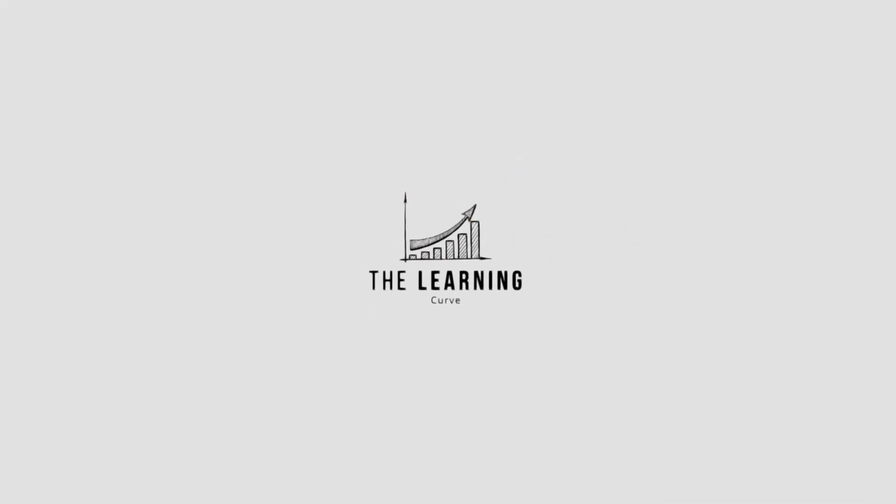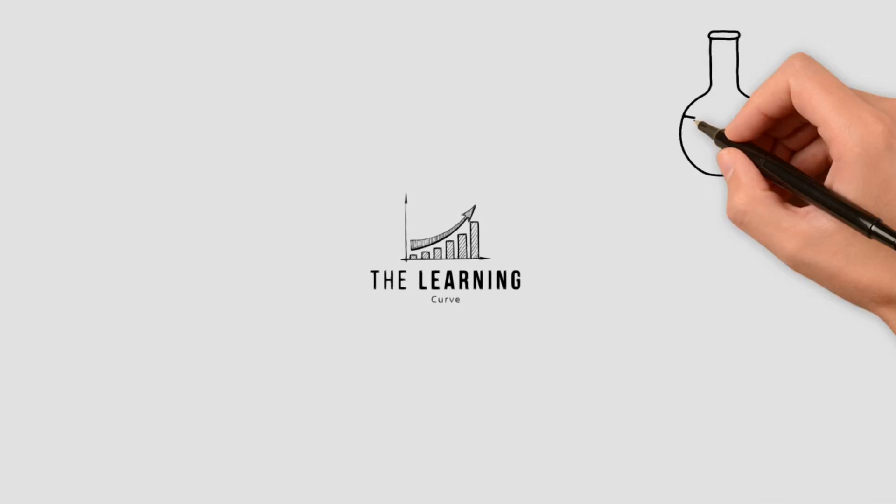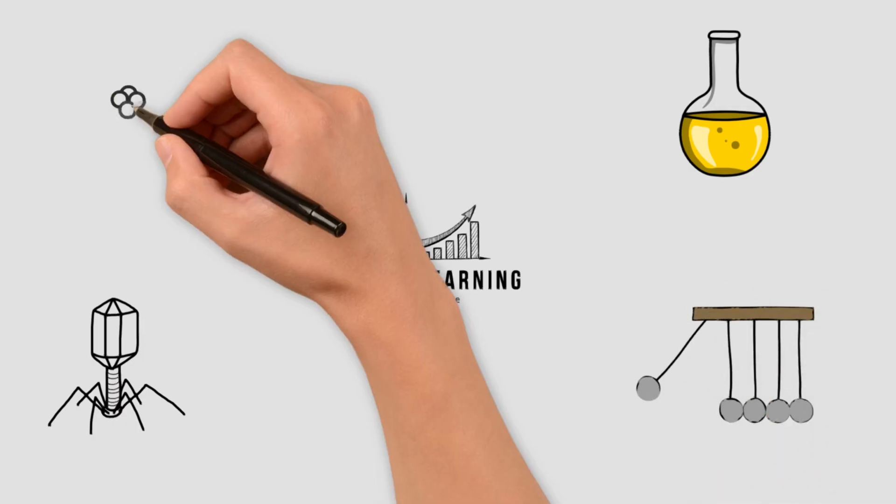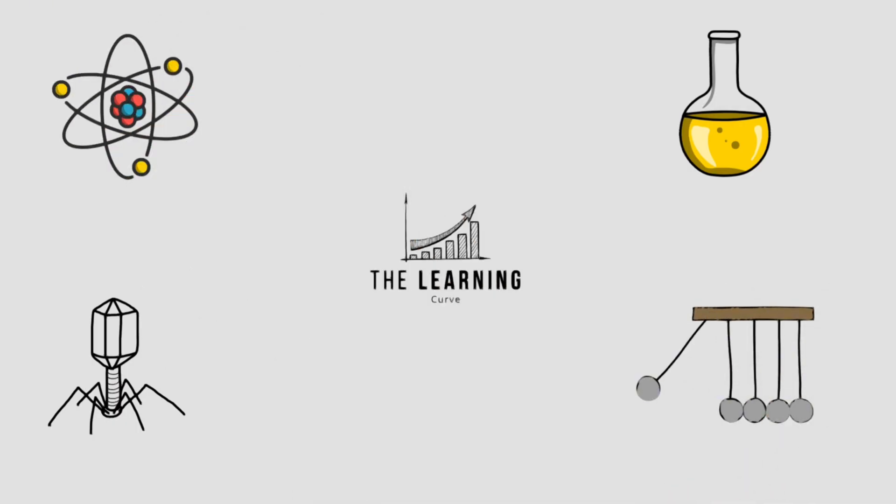And that's how you balance chemical equations. By following a clear method and keeping the law of conservation of mass in mind. Practice is key, so make sure to try more past paper questions if you have time. If this video helped you, give it a like and don't forget to subscribe to The Learning Curve for more tips and tricks. See you in the next video!